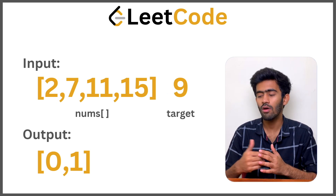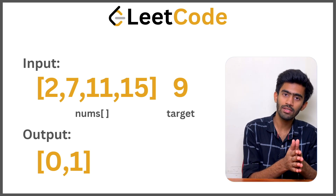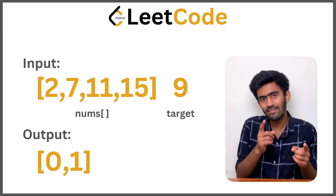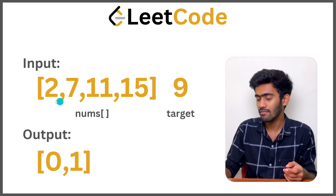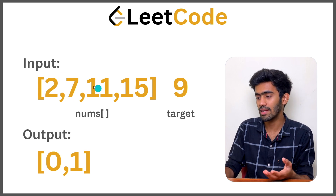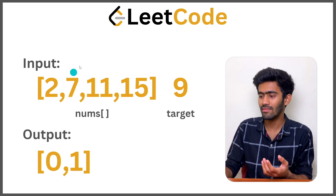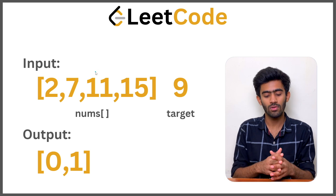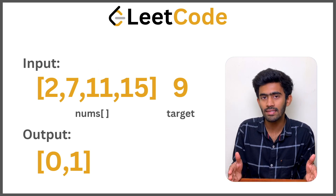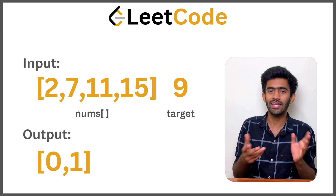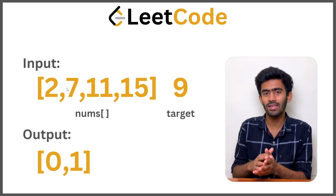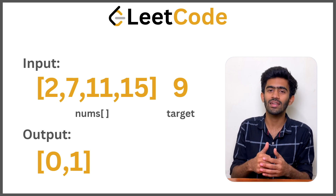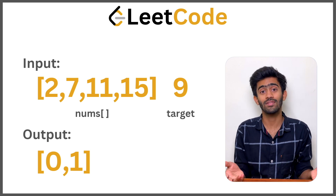How do we find this? The obvious brute force approach is to traverse the whole array and use a nested for loop to traverse the array again, checking whether each pair adds up to the given target — pairs like 2 and 7, 2 and 11, 2 and 15, then 7 and 11, 7 and 15, and so on. Using the brute force approach gives us O(n²) time complexity, which is really high. We don't want that, so we're going to reduce it to O(n).